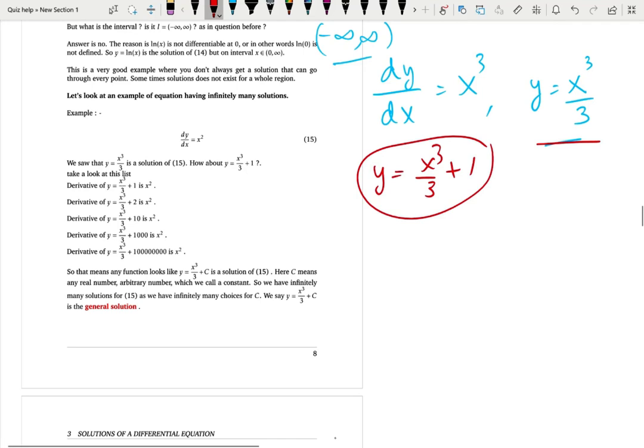It's simple, you substitute it back to the differential equation. So the left hand side says you have to take the derivative. So derivative of x cube over 3 plus 1, derivative of x cube over 3 is 3x square over 3, derivative of 1 is 0.